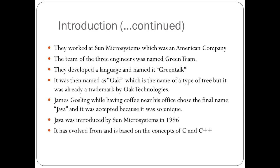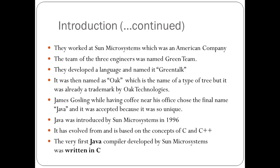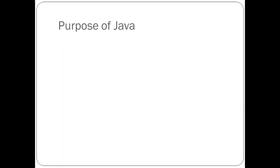Java was introduced by Sun Microsystems in 1996. It has evolved from and is based on the concepts of C and C++. The very first Java compiler developed by Sun Microsystems was written in C.